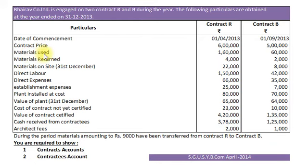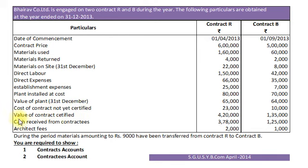Other details of the contracts are: Contract Price, Materials Used, Materials Return, Materials On Site on 31st December, Direct Labor, Direct Expenses, Establishment Expenses, Plant Installed at Cost, Value of Plant on 31st December, Cost of Contract Not Yet Certified, Value of Contract Certified, Cash Received from Contract Tees and Architect Fee.